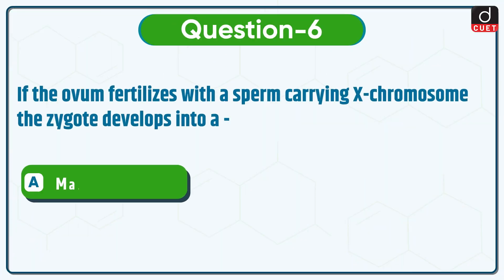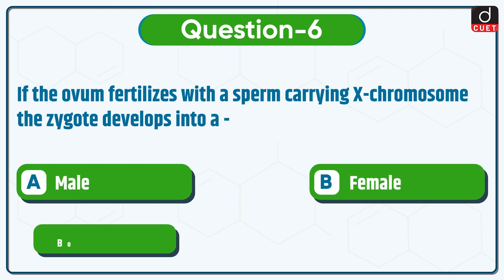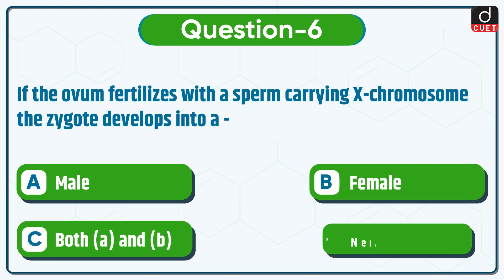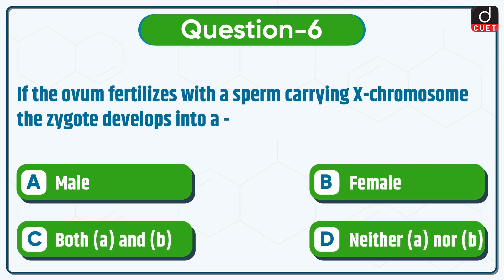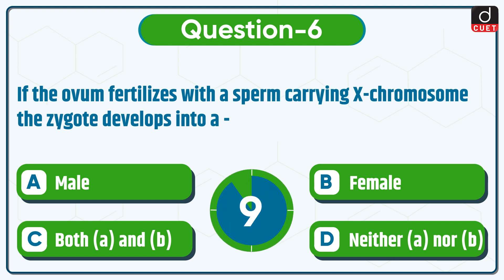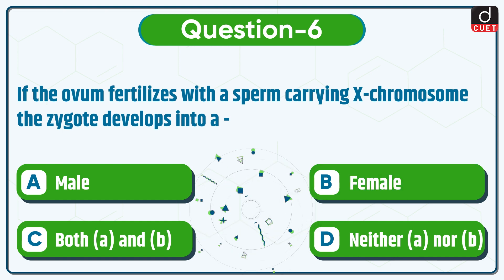Next question is: if the ovum fertilizes with a sperm carrying X chromosome, the zygote develops into a male, female, both A and B, or neither A nor B? The correct answer is option B, female.